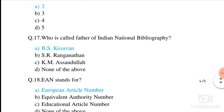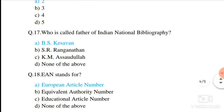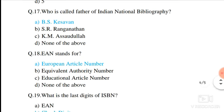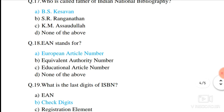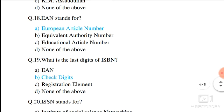Question number 17. Who is called the father of Indian National Bibliography? The correct answer is B.S. Kesavan. Question number 18. EAN stands for European Article Number.